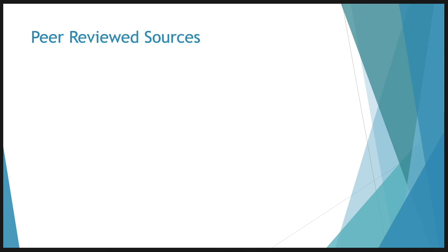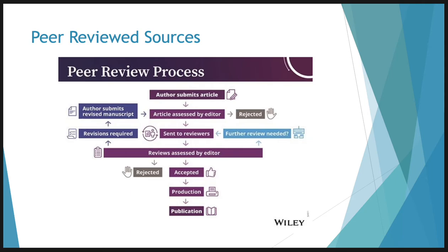One of the biggest differences between these sources is the peer review process. If you're a journalist working for Time magazine, you get hired, given or pitch an assignment, your editor says yes or no, you write it, it gets checked, and it gets published. When writing for a peer-reviewed source, it's different. An author decides they want to research something, comes up with a question, does original research to add to the conversation, writes the article, and sends it off to the journal of their choice. From that point, the editor will assess it and either reject it outright or send it to reviewers.